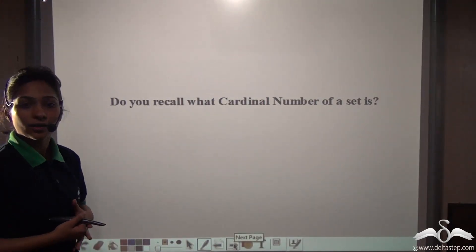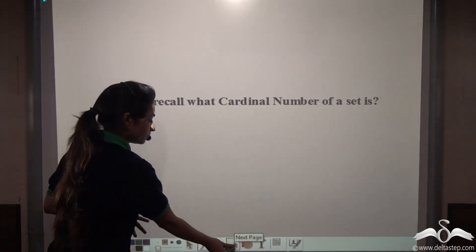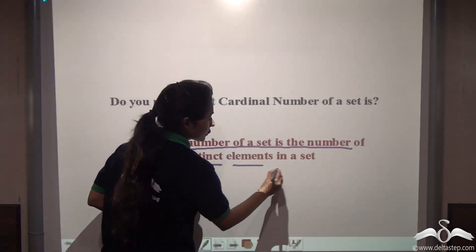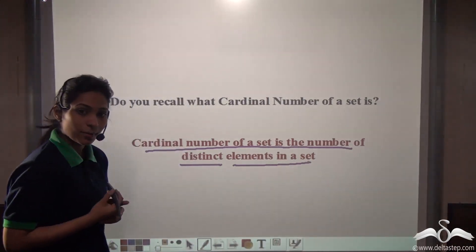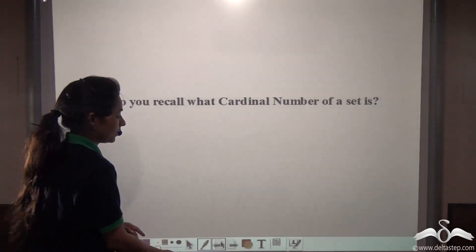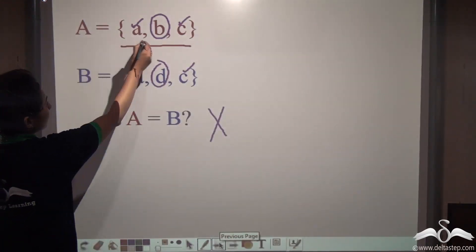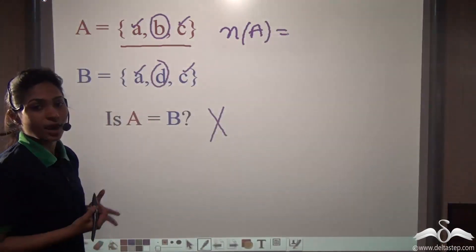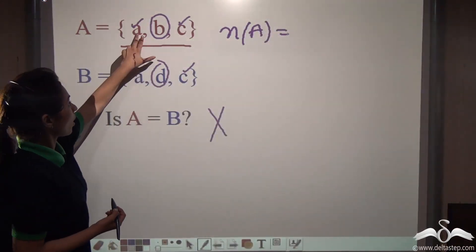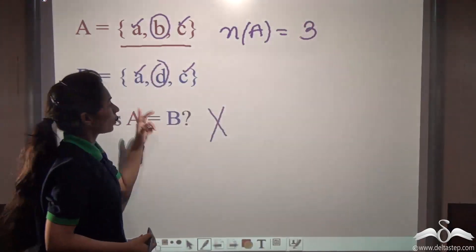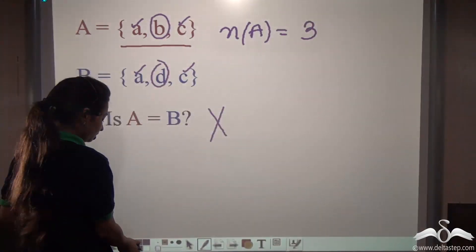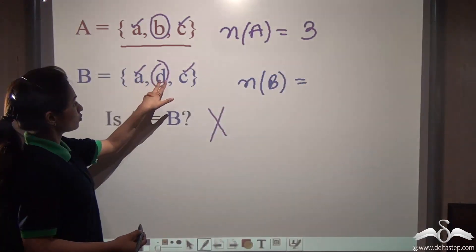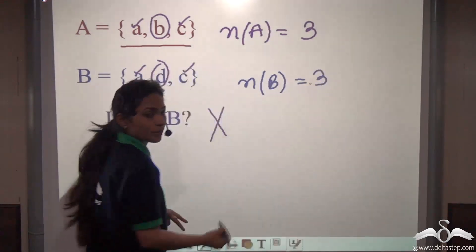Do you recall what the cardinal number of a set is? The cardinal number of a set is the number of distinct elements in a set. In the same example, the cardinal number of set A is 3 — one, two, three.